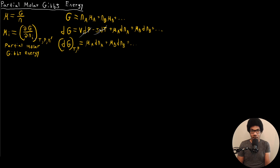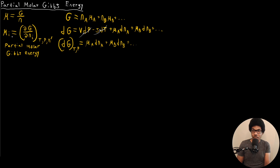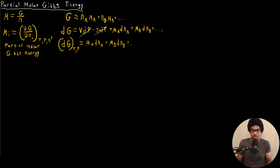This definition of the chemical potential should make a lot of sense now. If we wanted to isolate the chemical potential for component A in this expression, we just hold all the other number of moles constant. So we'd hold temperature, pressure, and the number of moles of all other components constant. This introduces the partial molar Gibbs energy and shows us that it directly corresponds to the definition of the chemical potential.